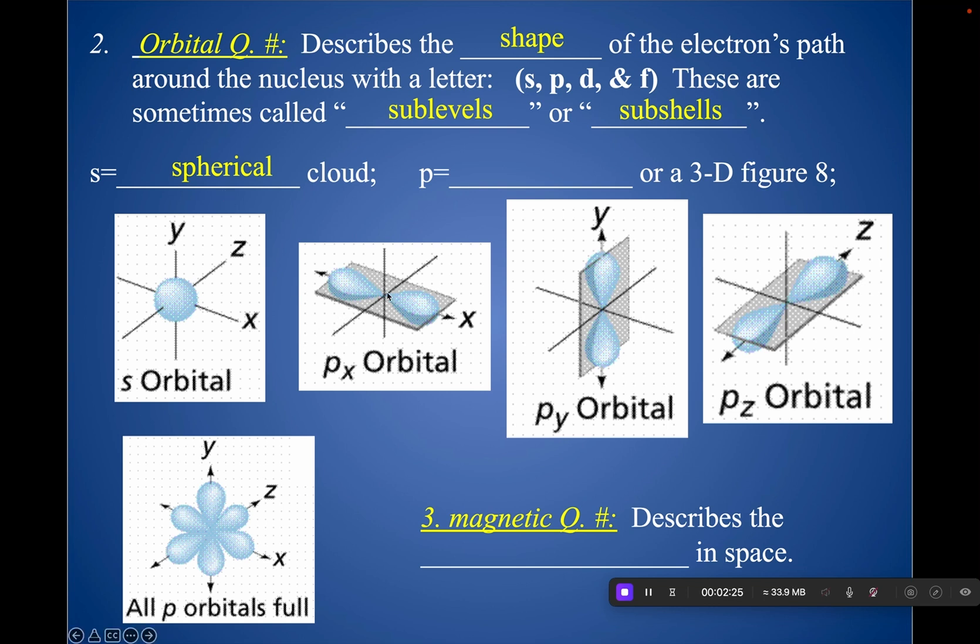In the P orbitals, the electron or electrons, depending if you have one or two, are moving so quickly that they create an ellipsoid kind of figure. Kind of almost looks like a figure eight where you basically have zero probability of finding it at the nucleus, but it creates these kind of balloon shapes here.